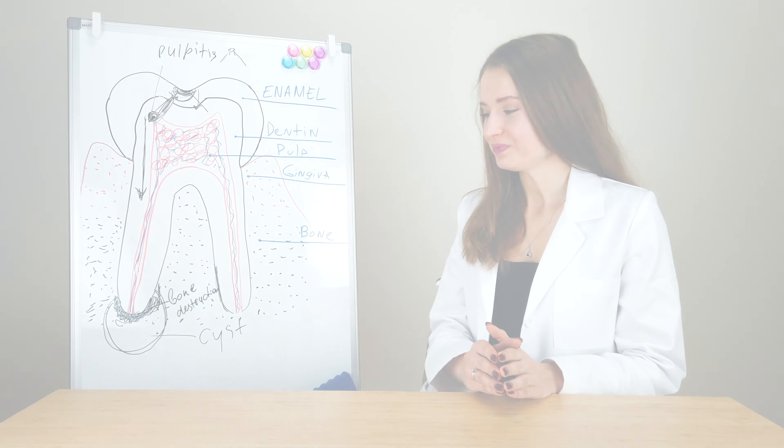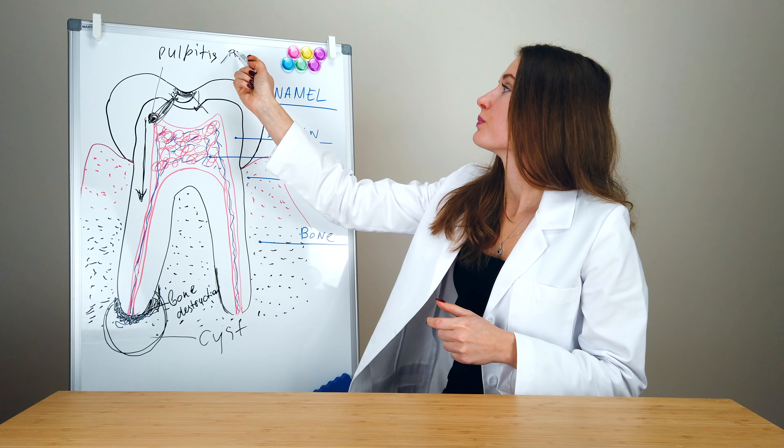Let's take a look at this illustration. Let's imagine that this tooth is in our oral cavity. Each tooth has a visible part, which is the clinical crown, and it is located above the gingiva. Each tooth also has an invisible part, which is the root, and it is located inside the bone.